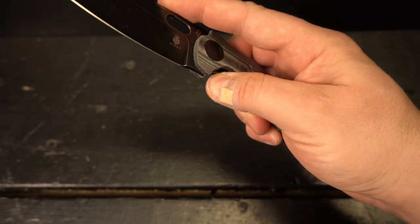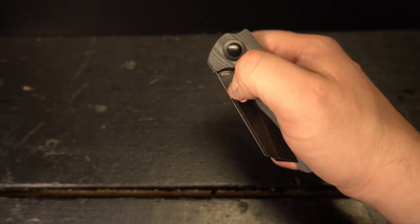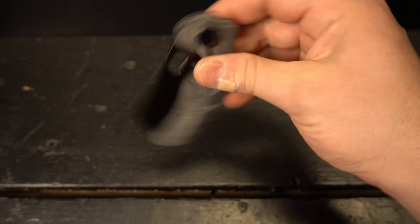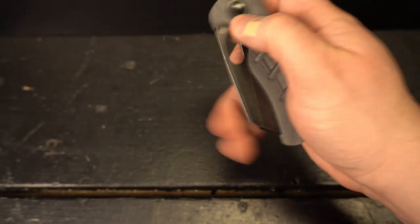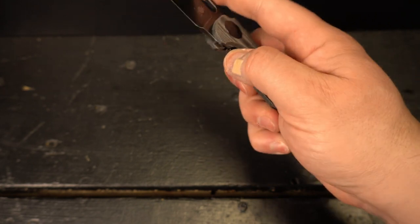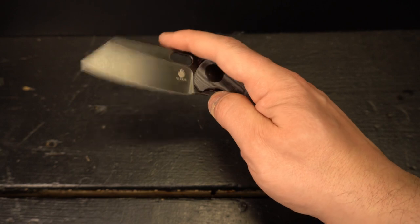So this has the 154CM steel on it as well. I'm going to try to thumb flick. Not bad. A little heavy detent. That detent's a lot heavier than I thought it was going to be for a thumb hole flicker. I almost lost my grip there. Did you see that?